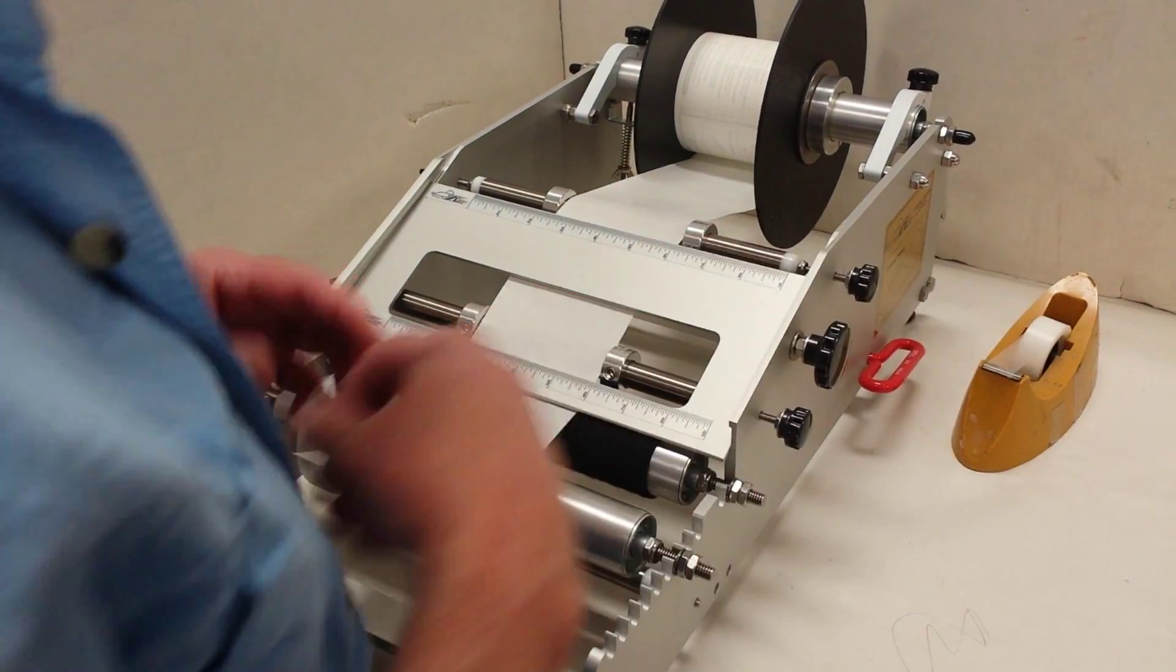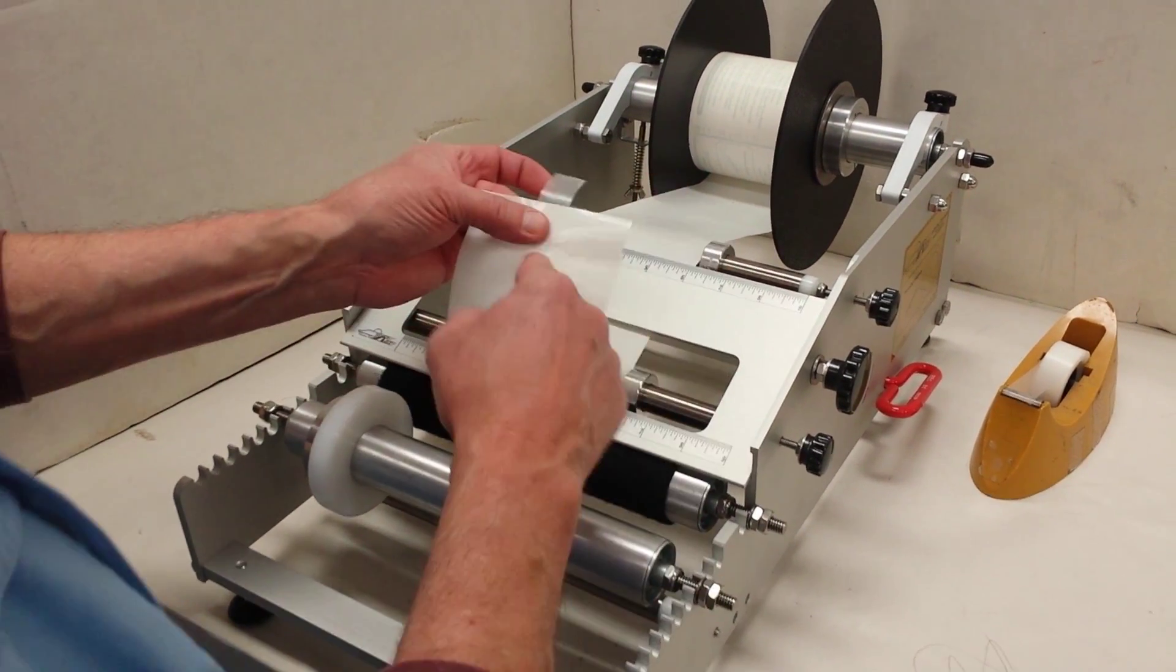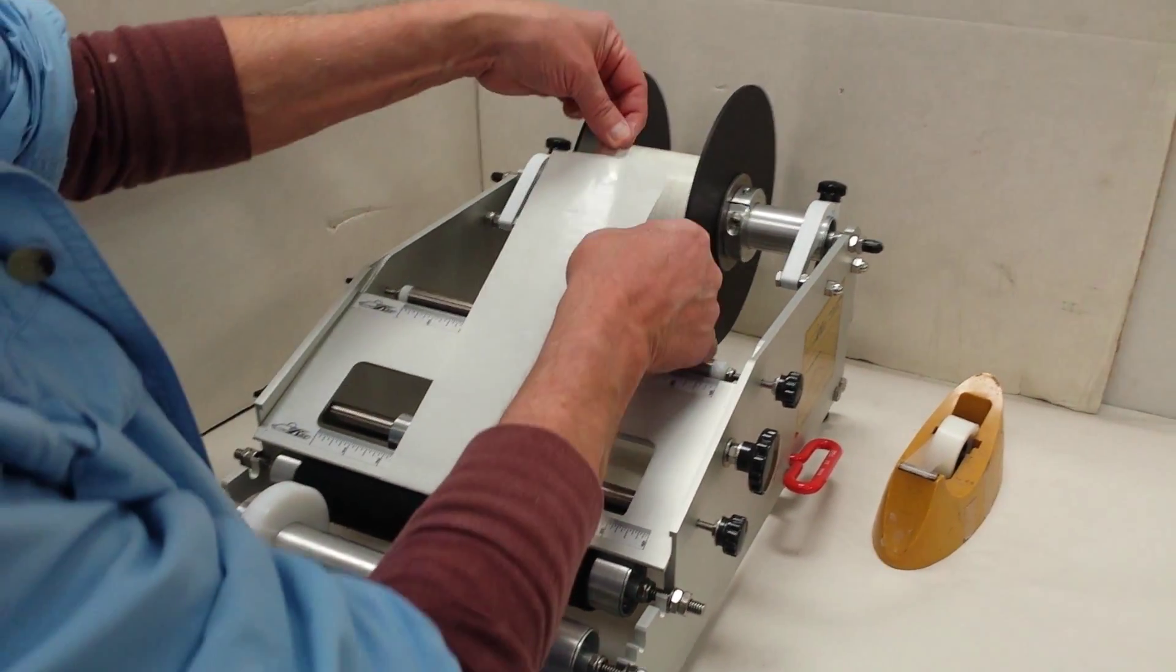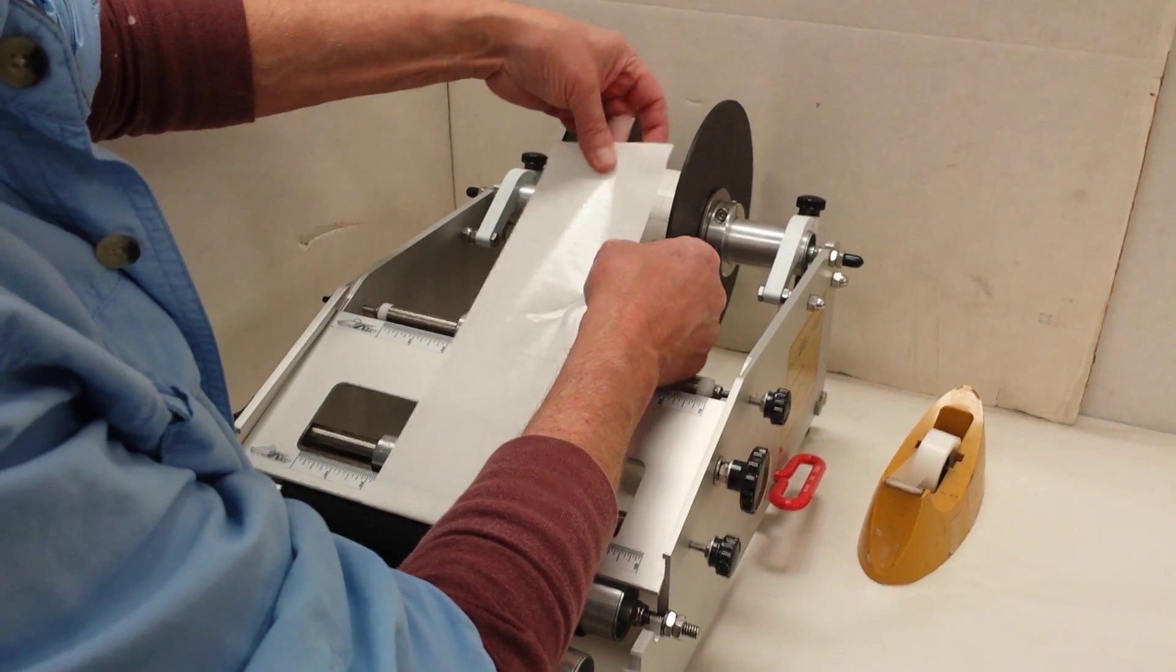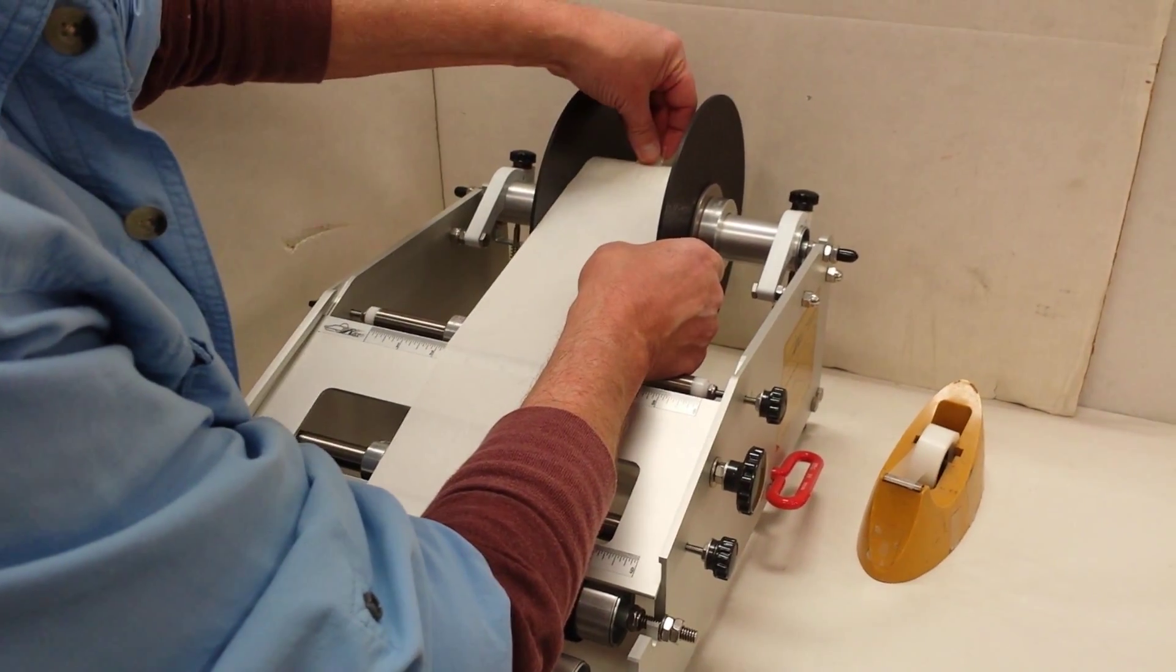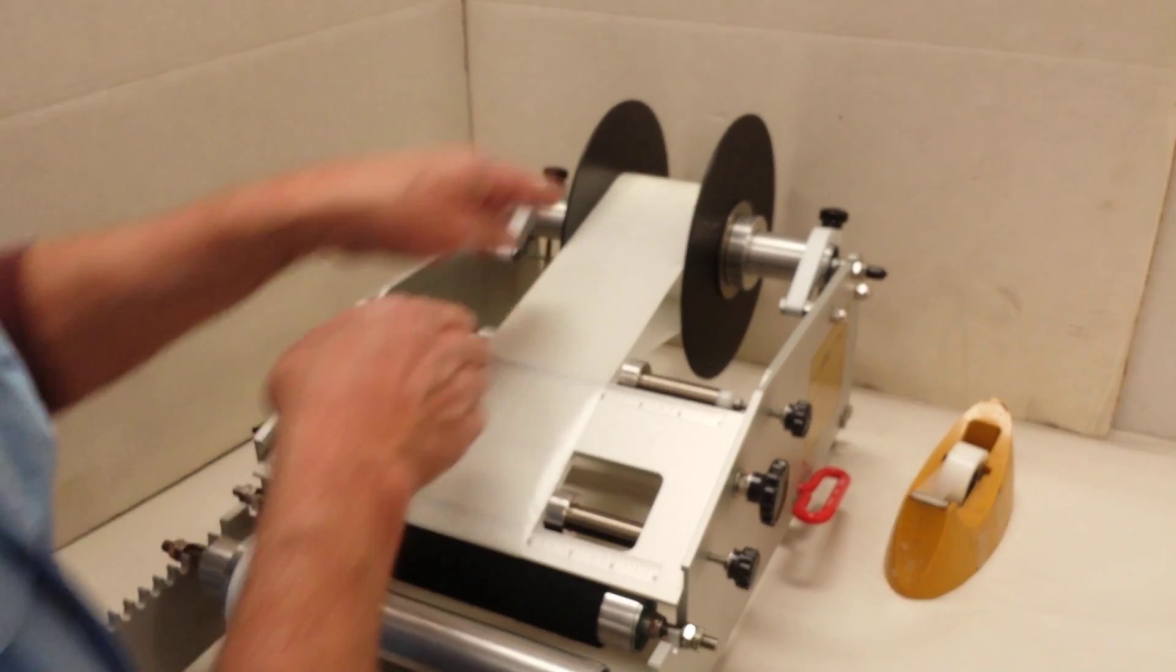Then have a piece of tape handy and put the tape right on the end here. Take the end up to the top of the roll of labels and tape it right to the top of the roll of labels.